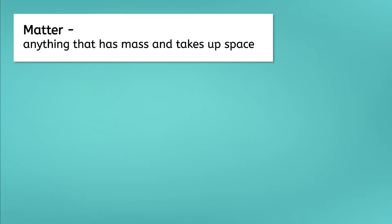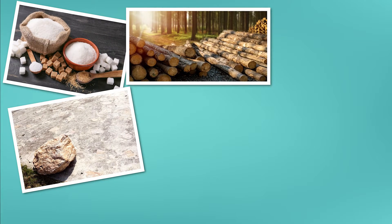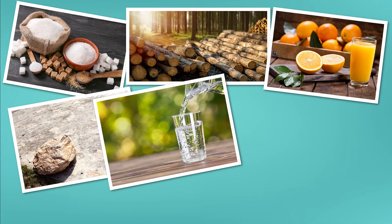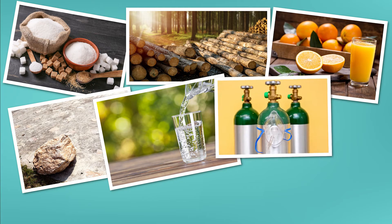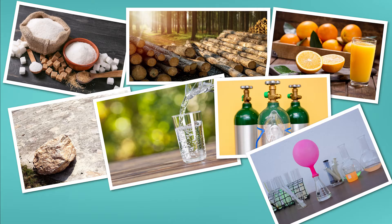Types of matter include solids such as sugar, rocks, and wood, liquids like water and orange juice, and even gases like air and oxygen. You might not think that a gas has mass and volume, but picture an empty balloon and compare it to an inflated balloon. The air inside the inflated balloon definitely has volume and mass.